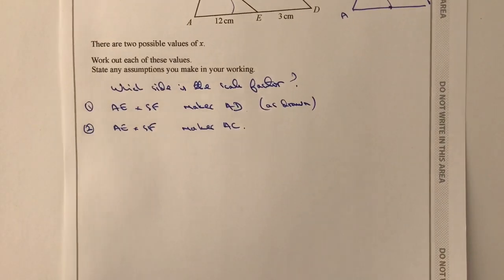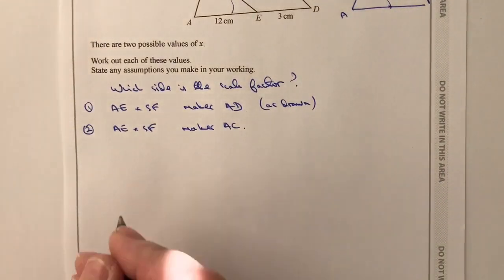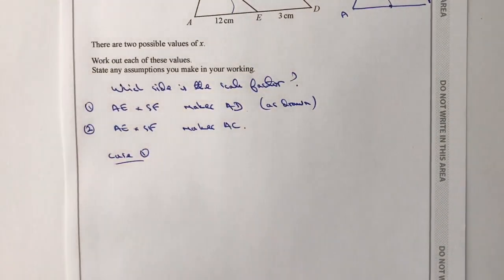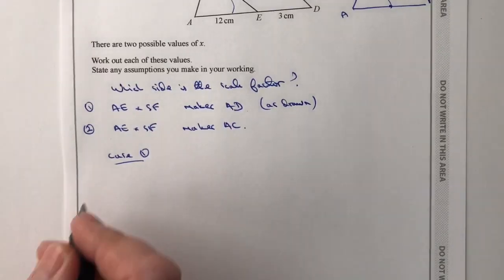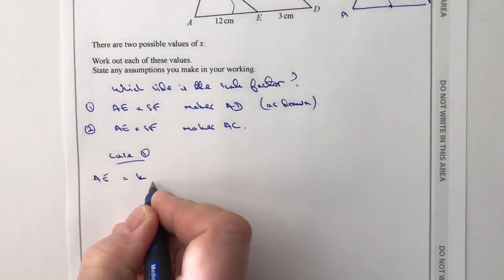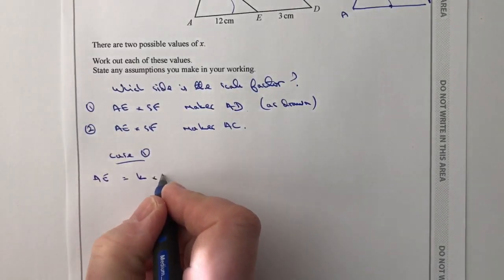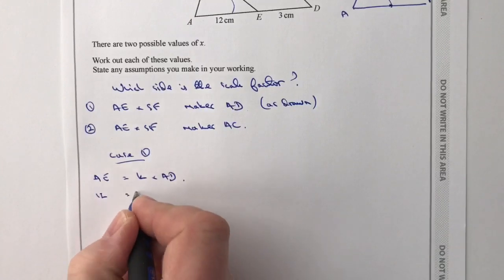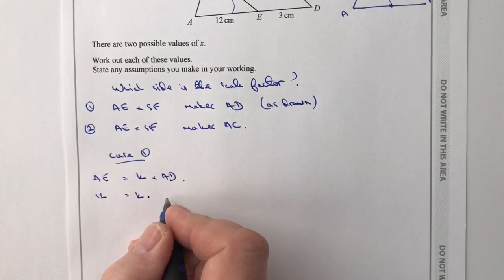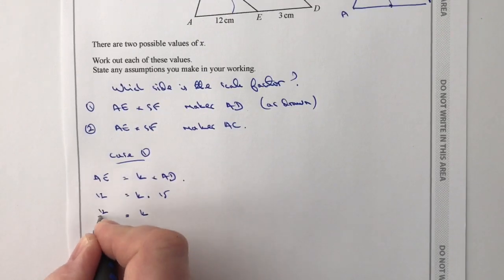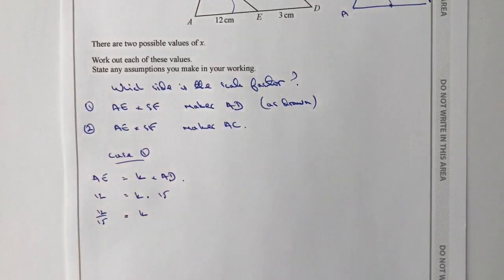So we've got two scenarios that we can look at. We've got case one, which is the first one, and hopefully this will be fairly straightforward, that I've got AE, and that's multiplied by a scale factor, which I'm going to call K times AD. And I could just basically plug in the information I've got. AE is 12. I'm going to multiply it by some sort of scale factor to make it 15. So therefore, I can say that K equals 12 over 15.